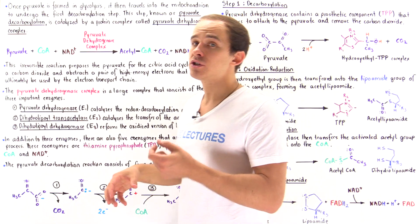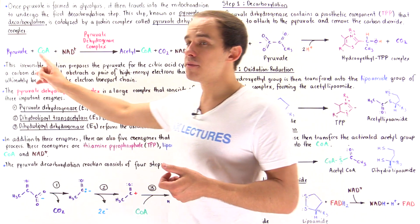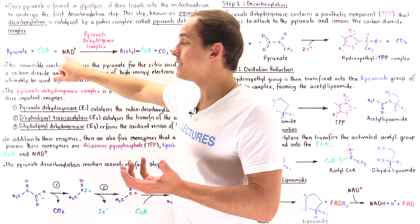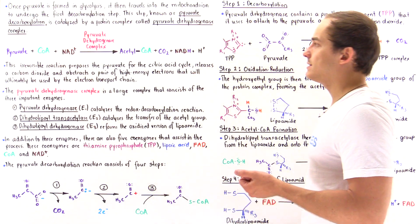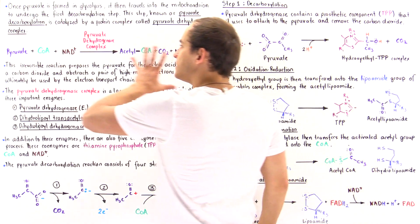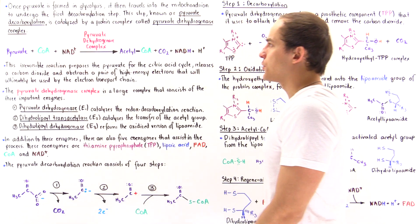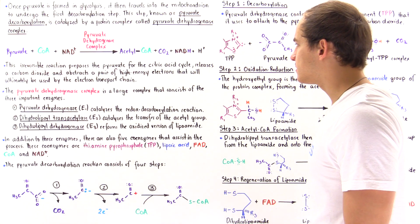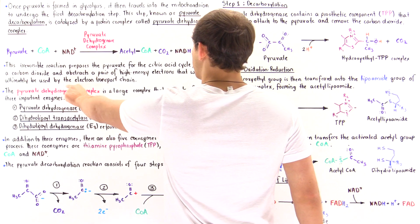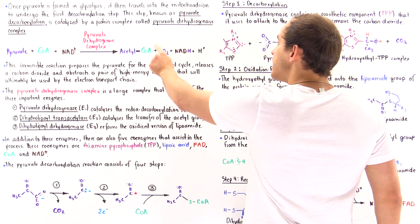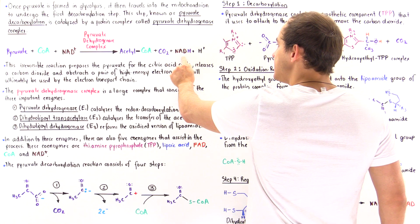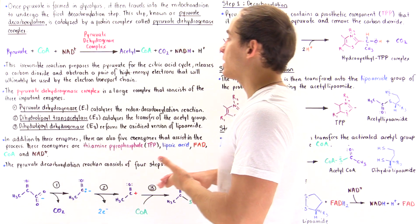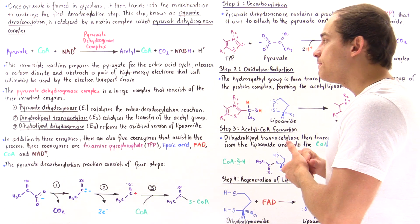In the process, two electrons are abstracted from the pyruvate and picked up by nicotinamide adenine dinucleotide to form NADH. This irreversible reaction prepares the pyruvate for the citric acid cycle: it releases carbon dioxide and abstracts a pair of high-energy electrons carried by NAD, which are ultimately used by the electron transport chain to generate ATP molecules.